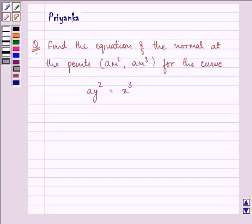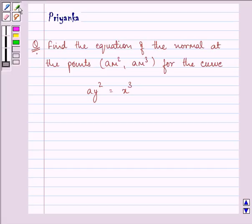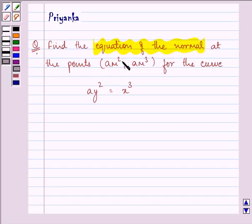Hi and welcome to the session. My name is Priyanka and I am going to help you with the following question. It says, find the equation of the normal at the points (am², am³) for the curve ay² = x³.